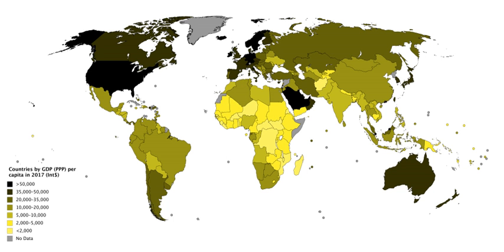GDP is the sum of consumption (C), investment (I), government spending (G), and net exports (X minus M): Y = C + I + G + (X - M). C is normally the largest GDP component in the economy, consisting of private expenditures. These personal expenditures fall under one of the following categories: durable goods, non-durable goods, and services.